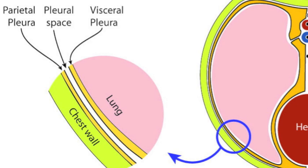There is a small amount of fluid in this space which we do need for normal respiration to occur. Alongside that is the visceral pleura, and this basically protects the lungs. So that's the anatomy that we're going to focus on when we're talking about our pneumothorax.